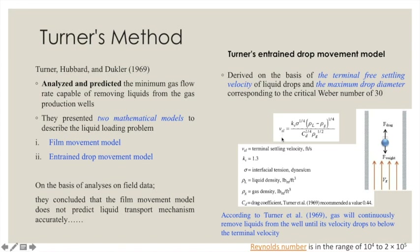According to Turner 1969, gas will continuously remove liquid from the well until its velocity drops to the terminal velocity. Similar to liquid separation in a vertical separator, the gas here carries liquid upward and the liquid does not settle back as long as gas velocity exceeds terminal velocity. Once the upward gas velocity becomes less than the terminal velocity, liquid starts accumulating inside the well. This is the logic behind the Turner entrainment drop model.